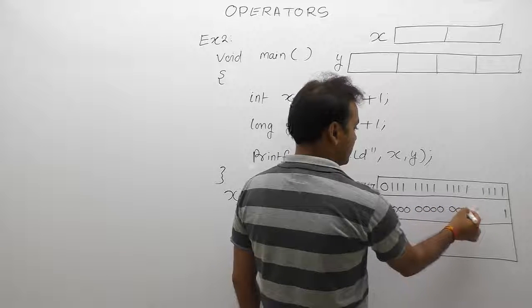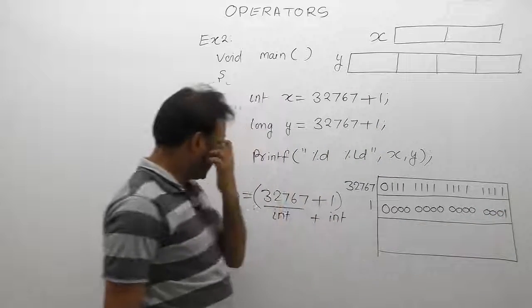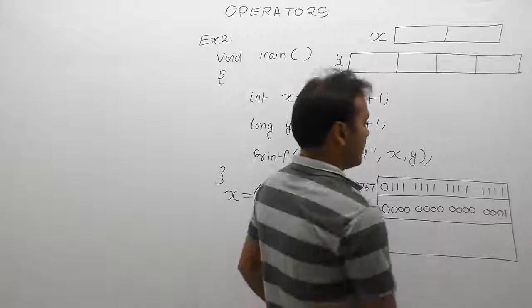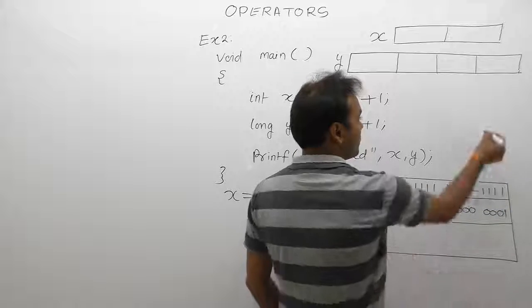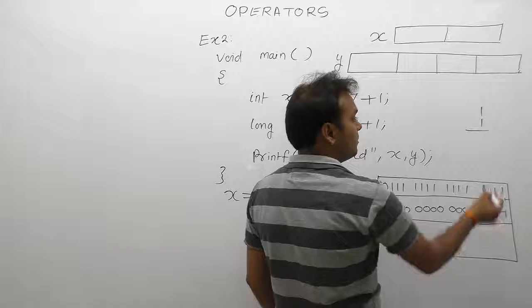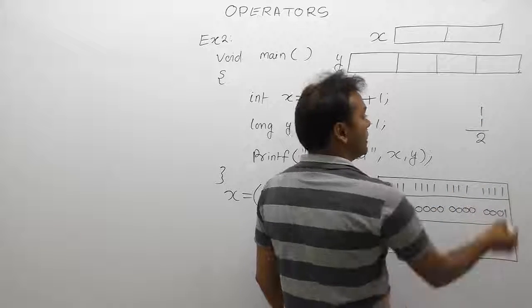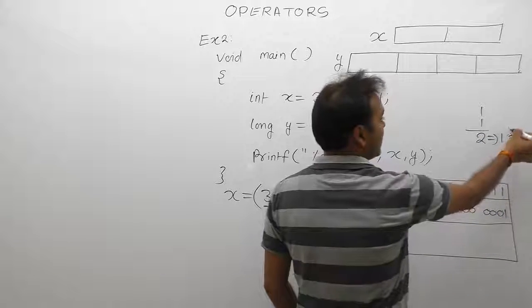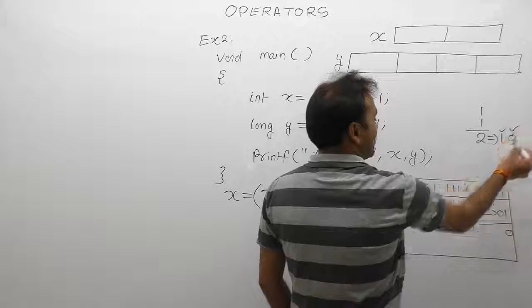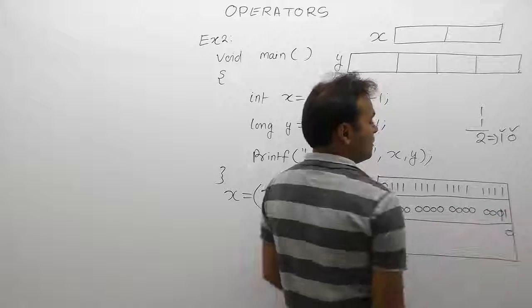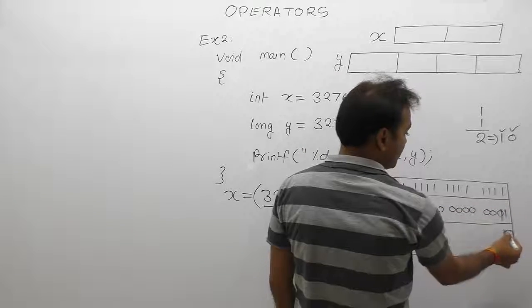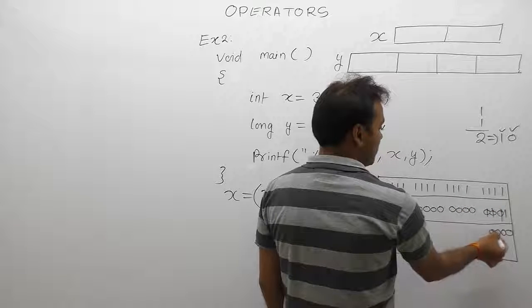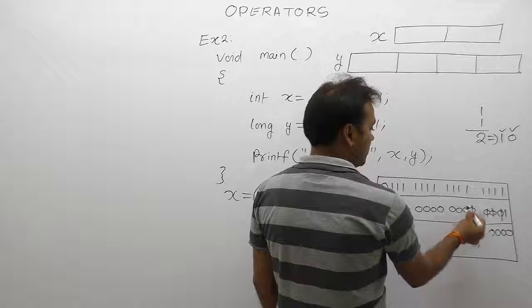Next, we perform addition directly on the binary bits. In binary addition: 1 plus 1 equals 0 with a carry of 1 added to the next bit. So 1 plus 1 is 0, carry is 1; again 1 plus 1 is 0, carry is 1; and 1 plus 1 is 0, carry is 1 — and so on each time.